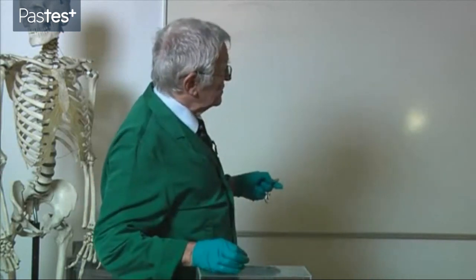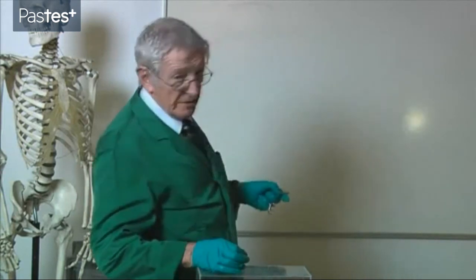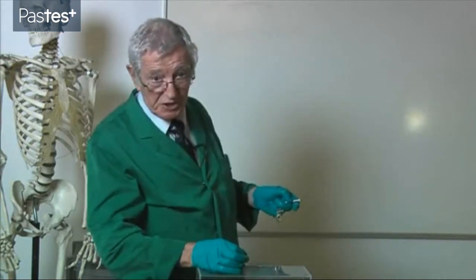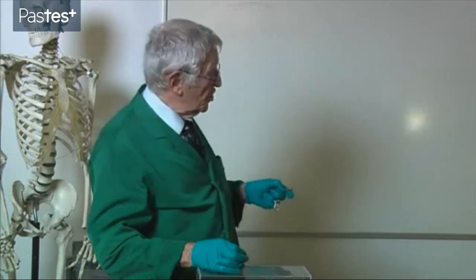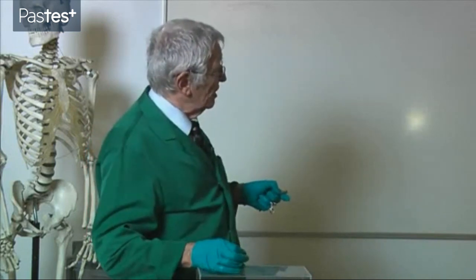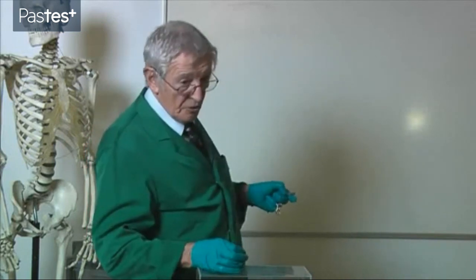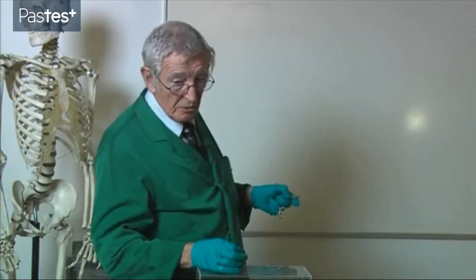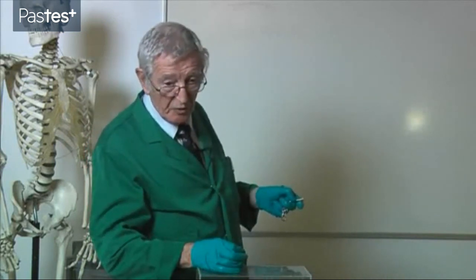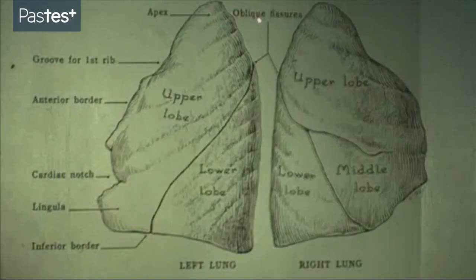So it's vital, if you're going to examine the chest properly, to turn the patient onto their side, lean the patient forward, turn the patient round, and examine the back of the chest in order to examine the lower lobe.